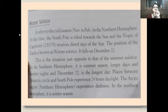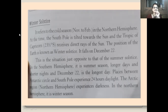This situation is just opposite to that of summer solstice. In the Southern Hemisphere it is summer season — longer days and shorter nights — and December 22nd is the longest day. Places between the Antarctic Circle and the South Pole experience 24 hours of daylight. The Arctic region experiences darkness, and in the Northern Hemisphere it is winter season.